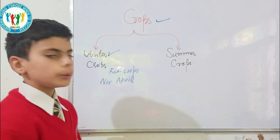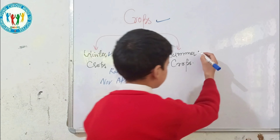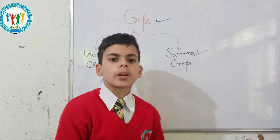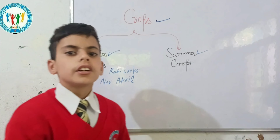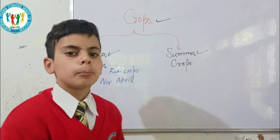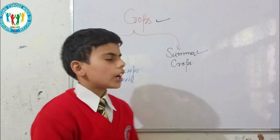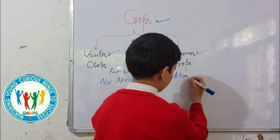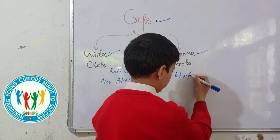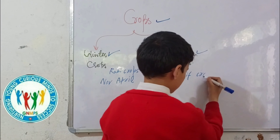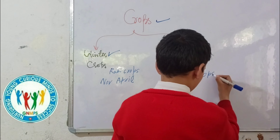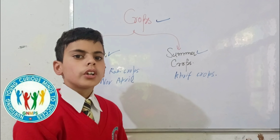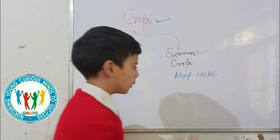Now we will discuss about summer crops. During summer and rainy season, farmers grow crops like rice, maize, jowar, and bajra. They are called kharif crops, or summer crops. They are grown from June to October.